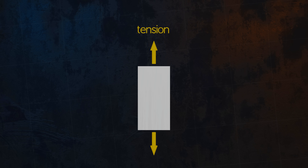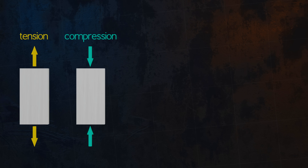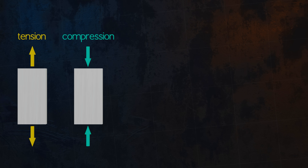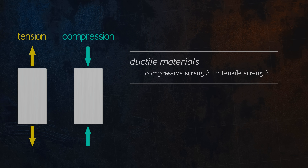So far, we have only discussed strengths in the tensile direction. But what about the compressive direction? For ductile materials like mild steel, the yield and ultimate strengths are very similar in the tensile and the compressive directions. Tensile tests are usually easier to carry out than compression tests, and so compression tests aren't often performed for these materials.